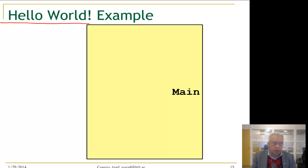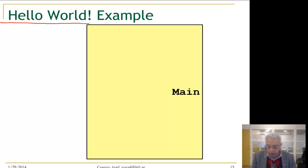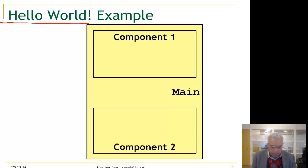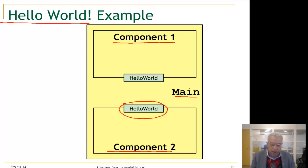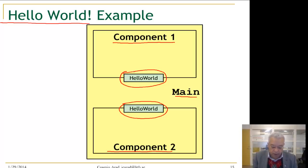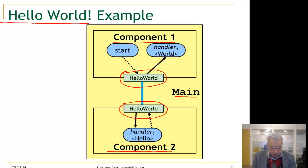We will build components in a hierarchical way, so we have the main component of our application, all running in one operating system process. Main will have two components: component 1 and component 2. Component 2 is going to provide a port called the Hello World port, and component 1 will require that port. We are going to connect these two components together.